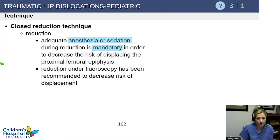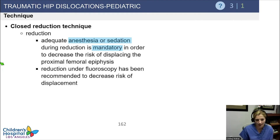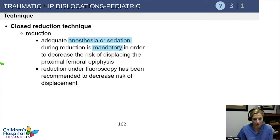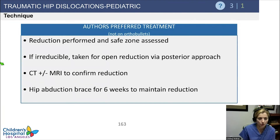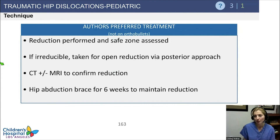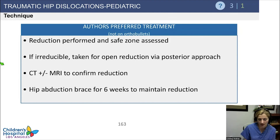Especially if there's an associated fracture or if it seems like the epiphysis is hinged, don't force things against the edge of the acetabulum if the child isn't adequately sedated. In high-risk cases, consider using fluoroscopy during reduction. In summary: reduce the dislocation, assess the safe zone; if irreducible or not concentrically reduced, proceed to open reduction usually via posterior approach — or anterior approach for anterior dislocations. Once reduced, get a CT and/or MRI to confirm reduction.